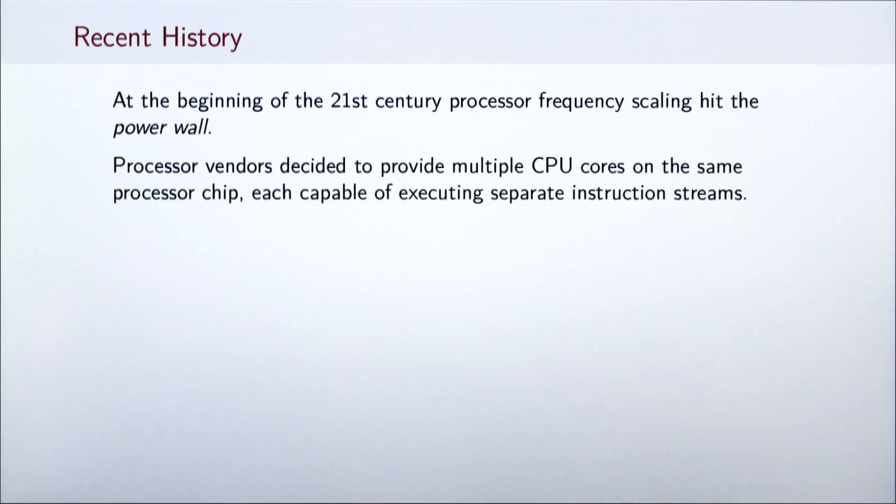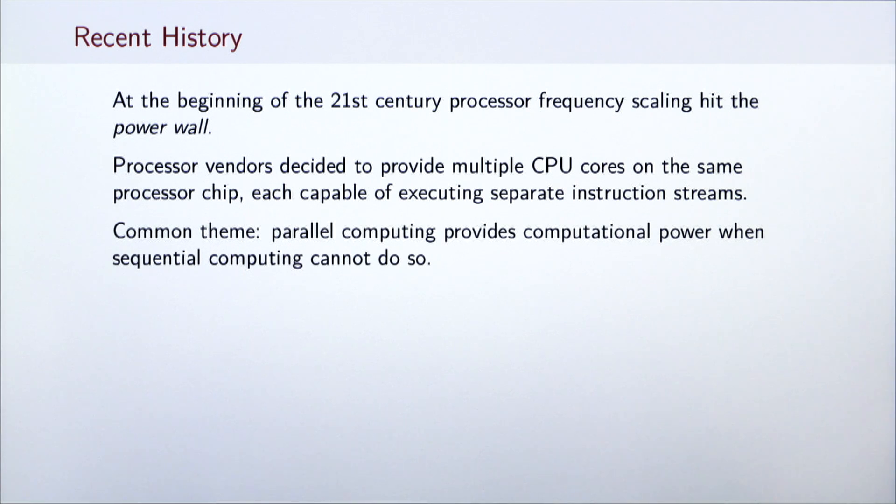So instead of increasing CPU clock frequency, processor vendors turned to providing multiple CPU cores on the same processor chip and named these new devices multi-core processors. It is interesting to note that these three stories share a common theme. Whether the need for faster computation arose from the sluggishness of a mechanical computer, limitations of the available technology, or the physical boundaries imposed by the power wall, additional computing power was provided through parallelization.